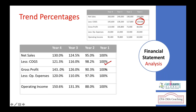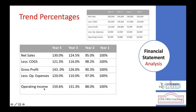Likewise, for cost of goods sold: first year, 120,000 over 120,000 times 100 = 100%. Second year, 117,800 divided by 120,000 = 98.2%. Each year figure is divided by the base year amount, which remains constant. Whatever year you are calculating the trend for, that year's amount goes in the numerator, and the base year amount stays constant in the denominator.